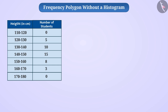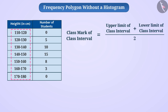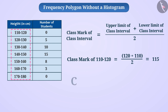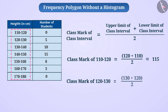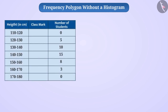To make a frequency polygon, we need the midpoint — called the class mark — of each class interval. The class mark of a class interval is equal to the upper limit of the class interval plus the lower limit of the class interval, divided by 2. Therefore, the class mark of 110 to 120 is 115. Similarly, the class mark of 120 to 130 is 125. We will find the class marks of all the class intervals in this way.